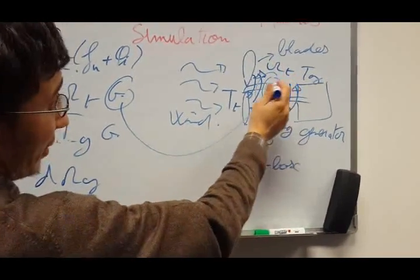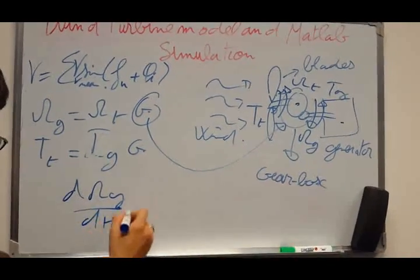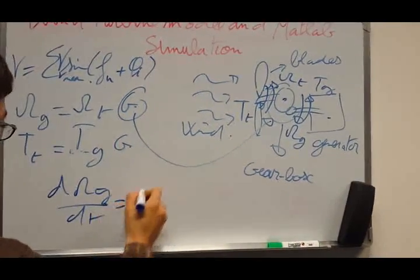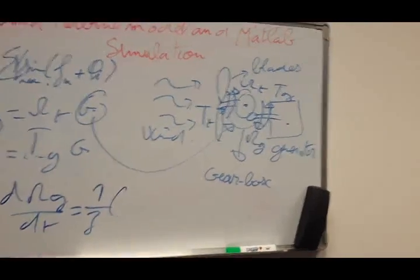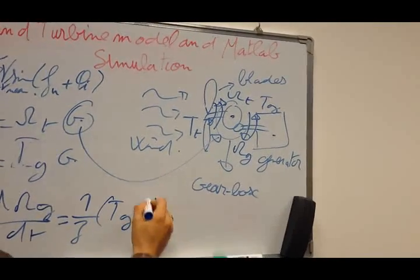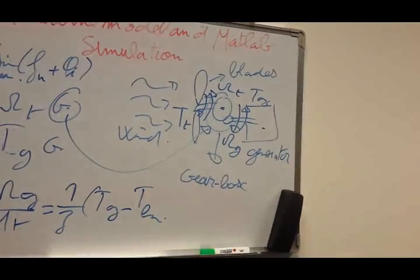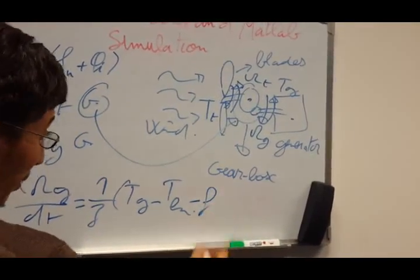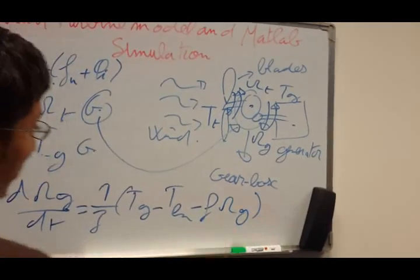The coupling system between the turbine, the gearbox, and the generator can be done as follows. The derivative of the speed of the generator is related to the inertia. This equation is known and can be found in the literature. It includes the torque of the generator and the electromagnetic torque, because there is an interaction between the mechanical system and the electromagnetic system of the generator, plus the coefficient of viscosity multiplied by the speed of the generator.